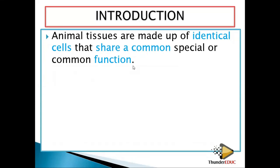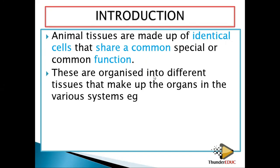These cells should perform either a special or a common function. For example, if it is for protection, it is for protection; if it is for absorption, it is for absorption; if it is for circulation, it is for circulation. There are many cells performing a specific function, and these are organized into different tissues that make up organisms in various systems.